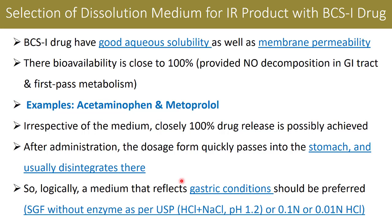Most of the time, for a BCS Class 1 drug substance in an IR drug product where manufacturing is not controlling the release of the drug substance, the drug release is supposed to happen in the gastric fluid. Hence, the composition of the gastric fluid becomes a very natural choice as a dissolution medium.